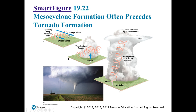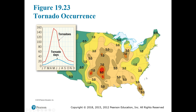We also have an updraft from the forming thunderstorm pulling air upwards. If this horizontally spinning axis of air gets caught up in the thunderstorm's updraft, it stands the column of air up — and that's what actually forms the tornado. Tornado Alley marks where tornadoes are most common in the US, clearly corresponding to where cold Canadian air meets wet tropical air. During cold fronts between those two air masses, conditions are most likely to generate a tornado.